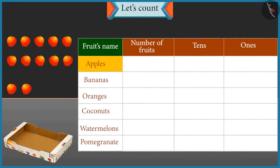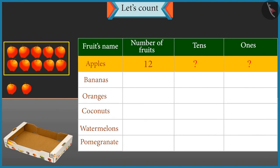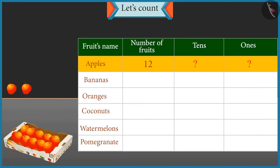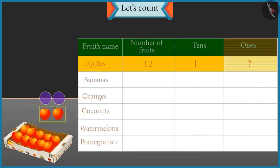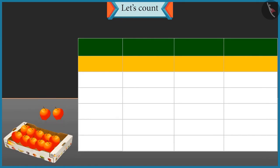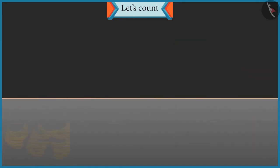Well done. Apples — twelve. Now tell me how many tens and ones are there in twelve? One group of ten will be formed and two apples will be left. So there is one ten and two ones. Well done.